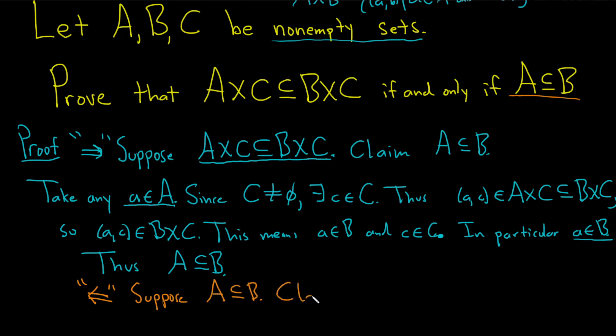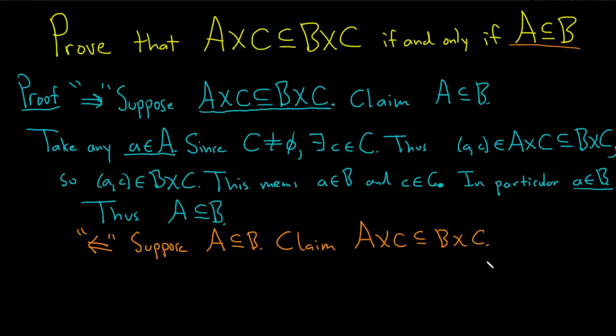And the claim is that A cross C is contained in B cross C. So we have to show that every element in this set is also in this set. So we'll start by taking an element in this set. And note we do have elements in this set. C is not empty so it's really a non-issue. So take any. This direction is a little bit easier. I'll use XY. XY in A cross C.